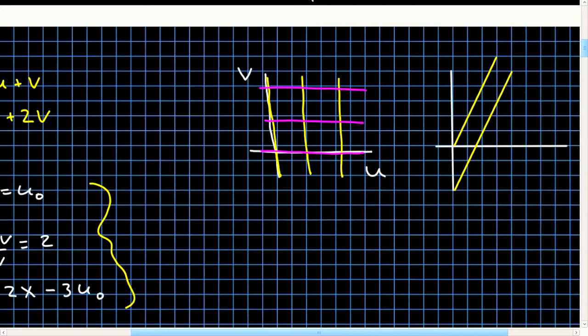Then I have my v curves. My v curves have slope 1 half. So that's over 2, up 1, over 2, up 1. I'm going to draw another one here. Over 2, up 1, over 2, up 1, over 2, up 1.